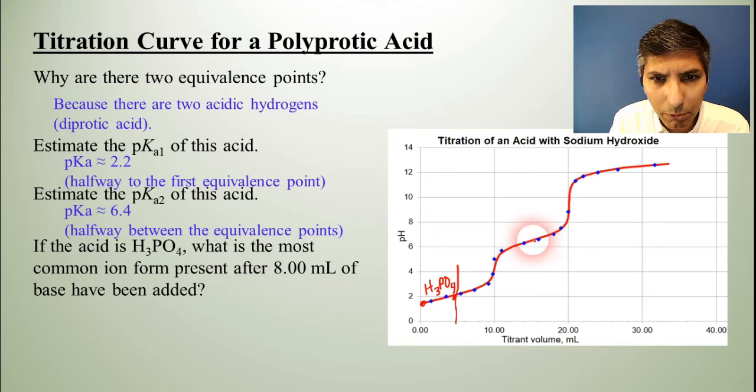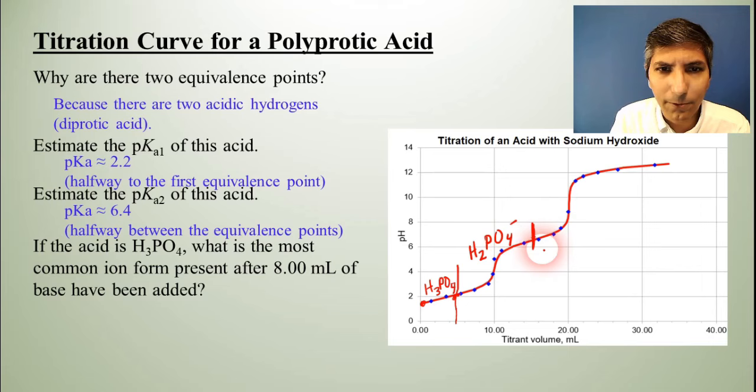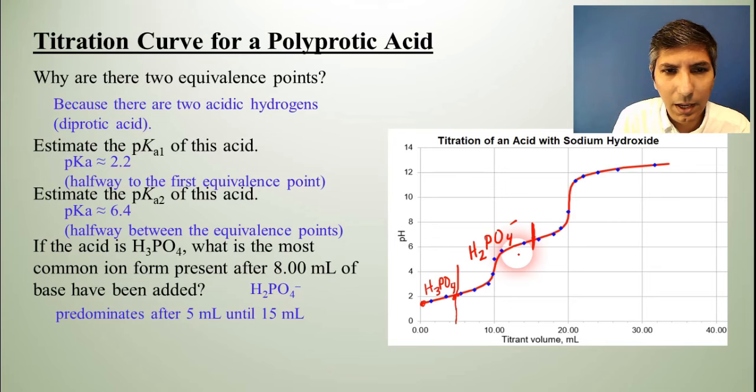from this point to that point, the most common form is going to be H2PO4 negative because that first acidic hydrogen has been taken away. So the answer here is H2PO4 negative. That's what's going to predominate after five milliliters up until the 15 milliliter point.